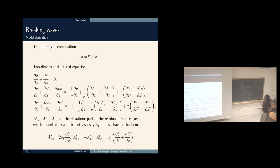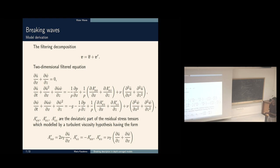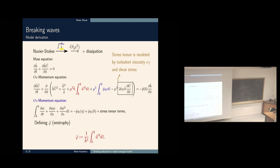Two terms appear: kinematic viscosity from the mean field and large-scale turbulence — which is quickly neglected since we consider inviscid flow — and the deviatoric part of the residual stress tensor, modeled by turbulent viscosity, adding a turbulent viscosity in front of the Laplacian. This term is very important for us because it will produce the vorticity. Starting from the free surface Euler equation in 2D and integrating over the depth from bottom to free surface, the mass equation is obtained exactly — no asymptotic error terms — from integrating the divergence-free condition.